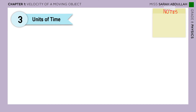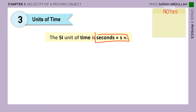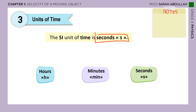Now that we've talked about instants and duration, let's get to know the units of time. We've seen minutes and seconds. The SI unit of time, chosen by the International Standard System, is the second. So if I ask you to find the time in the SI unit, you have to find it in seconds. But we also have other units: hours, minutes, and seconds, and we need to know how to convert between them.